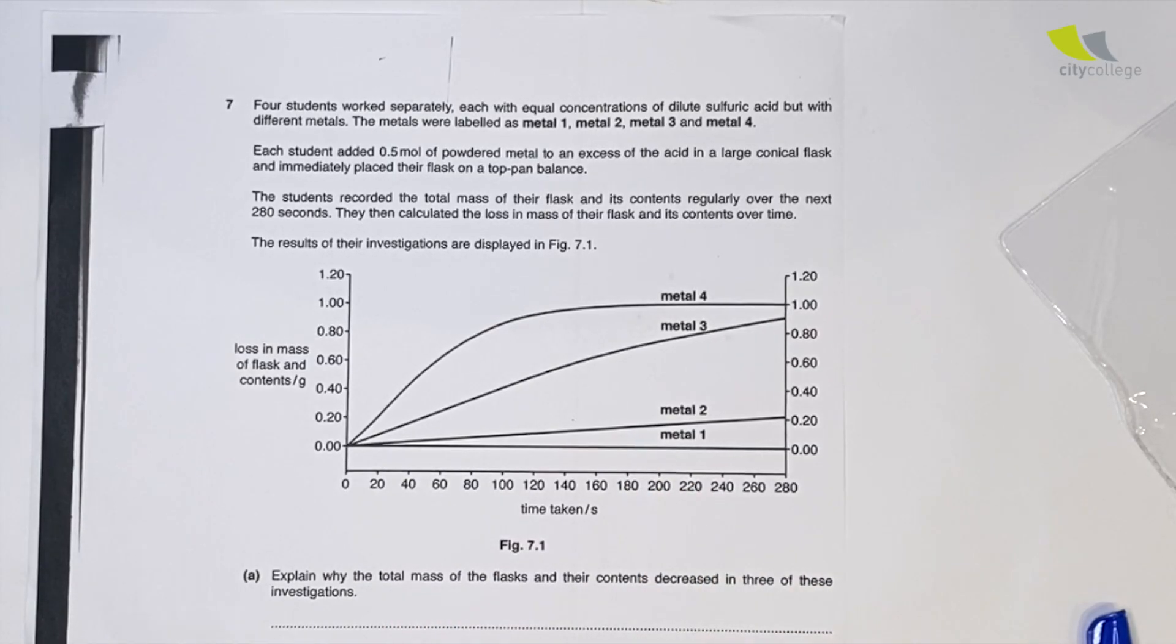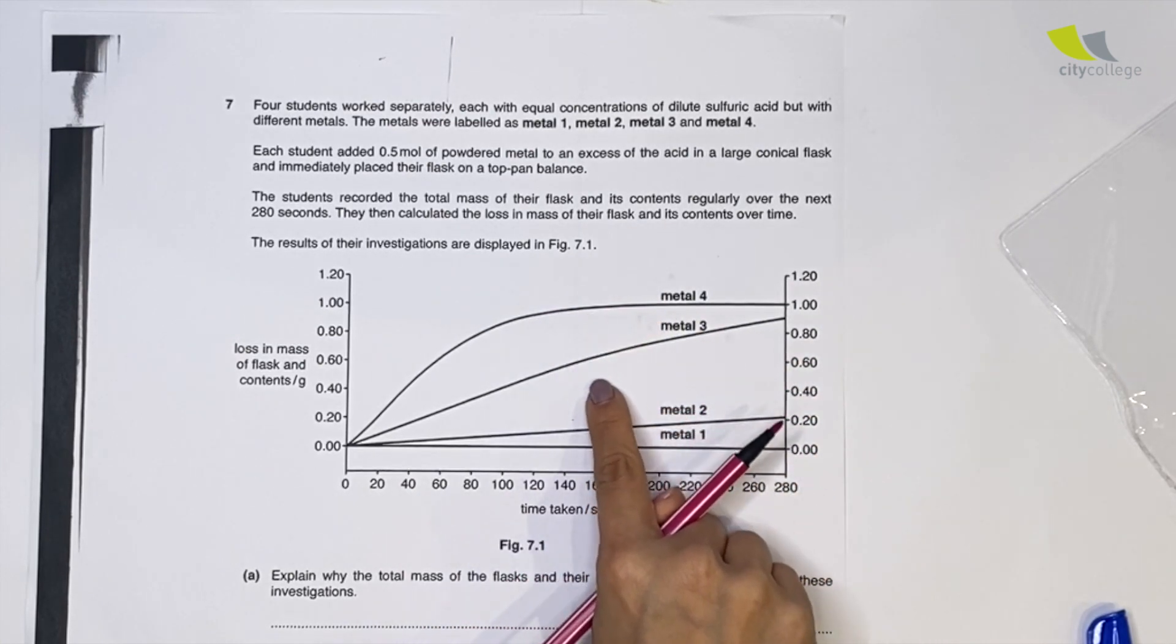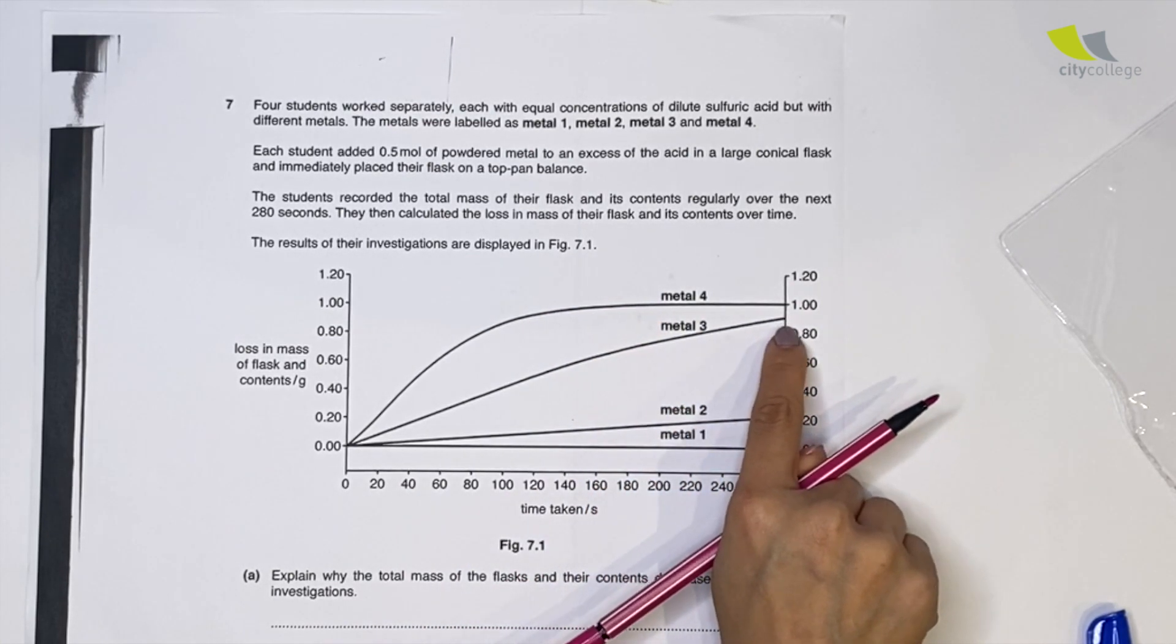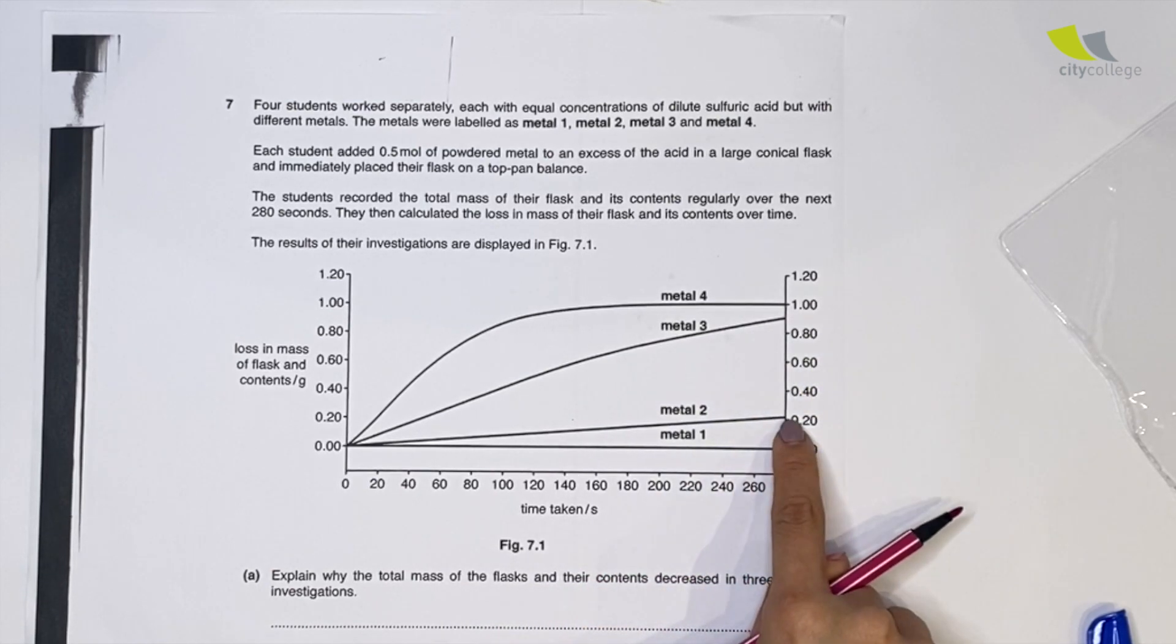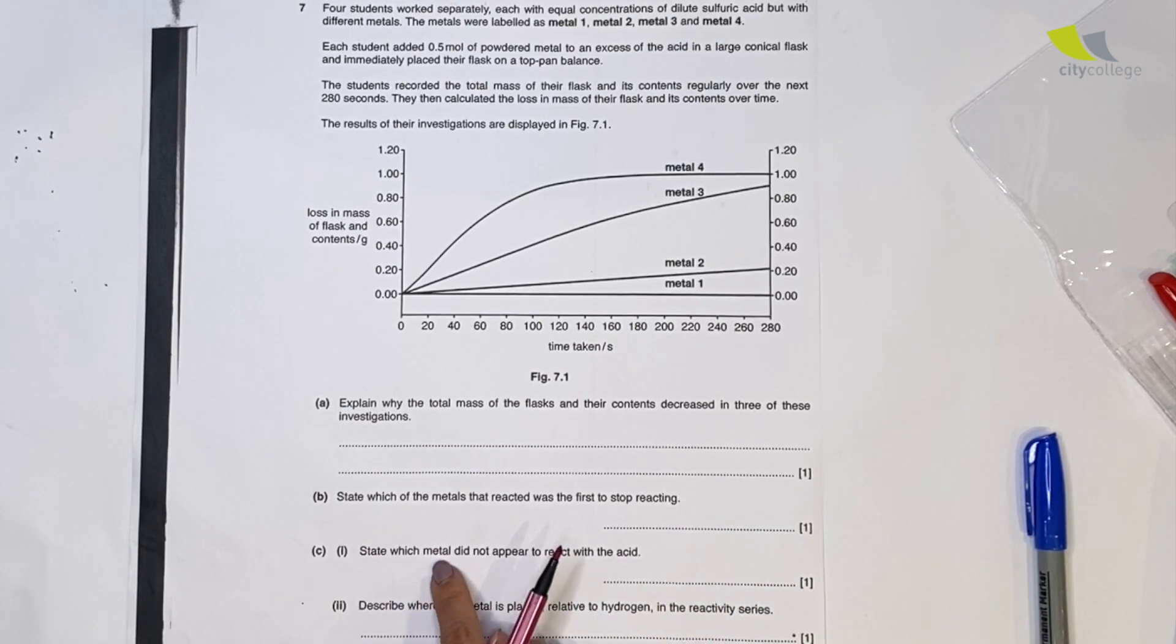Which one stopped reacting first? Metal 4 flatlined at this portion. Metal 3 is still reacting, still producing gas. Metal 2 is just about to start. So the one that first stopped reacting is 4. Which metal does not appear to react with acid? Metal 1.